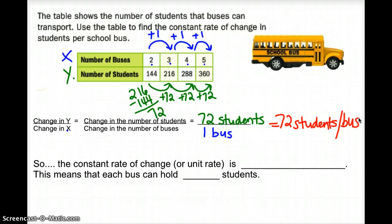Hopefully, you've noticed that the constant rate of change is also the unit rate. And we've already discovered that the unit rate, or the constant rate of change, is 72 students per bus. So, the big idea, this means that each bus can hold 72 students.